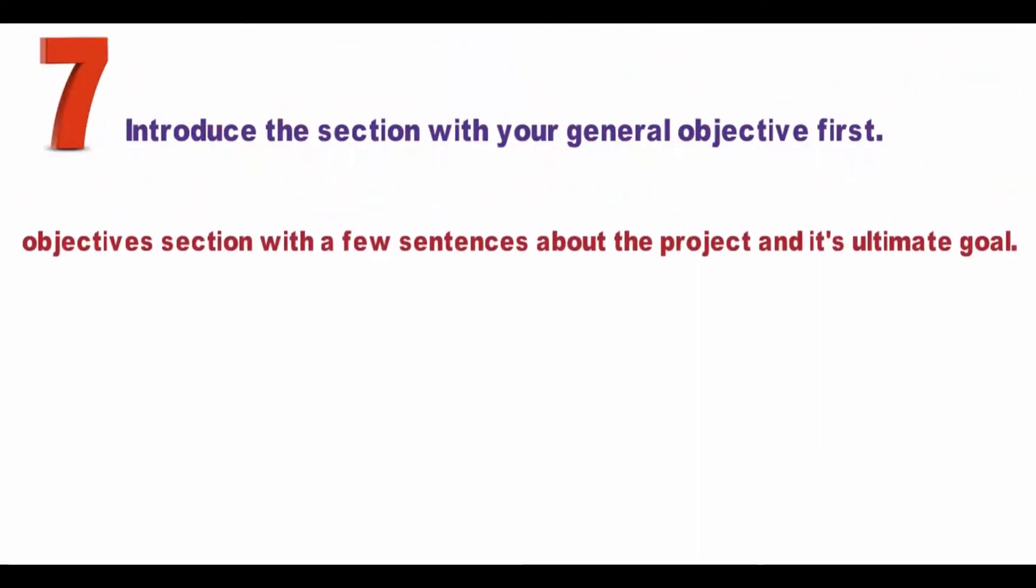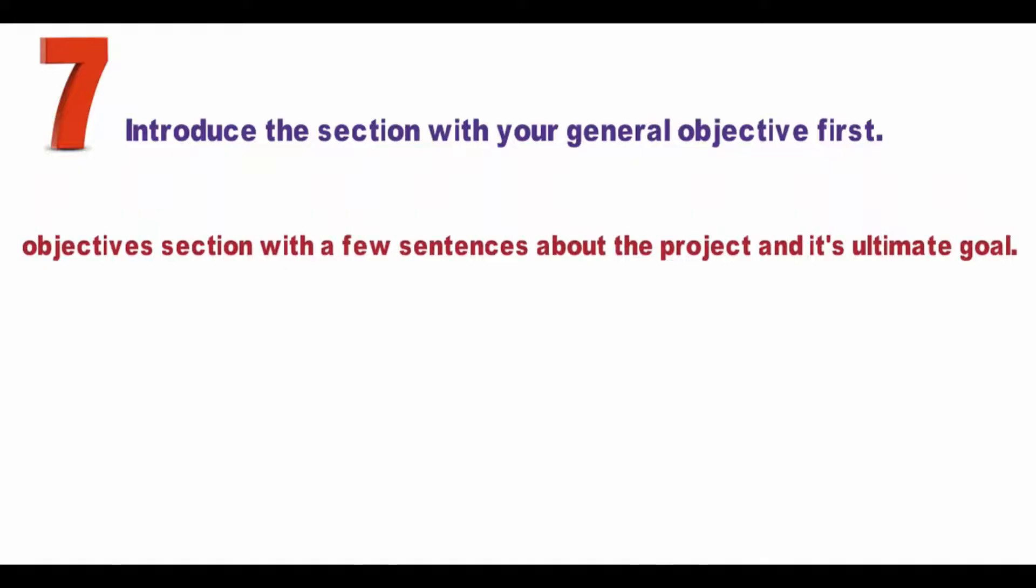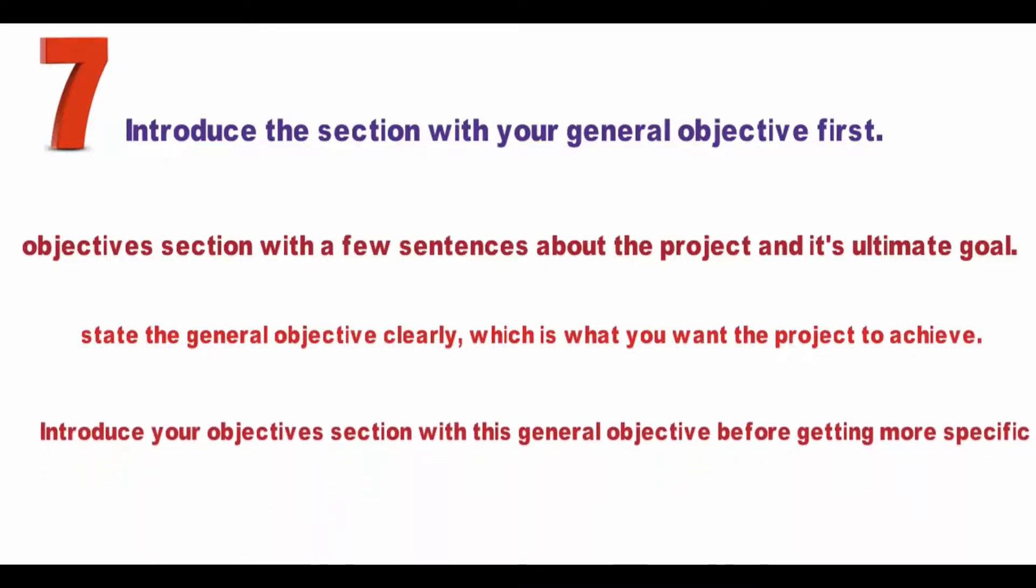Step 7: Introduce the section with your general objective first. Start off the objectives section with a few sentences about the project and its ultimate goal. In this introduction, state the general objective clearly, which is what you want the project to achieve. Introduce your objectives section with this general objective before getting more specific.